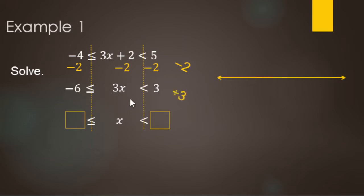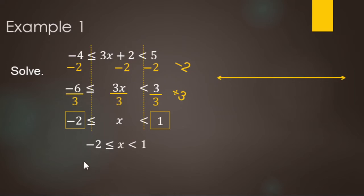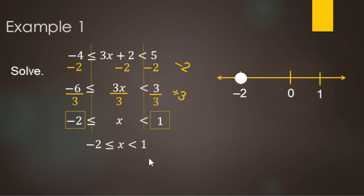Next, undo the multiplication by 3 with a divide by 3 to all three sides. Negative divided by positive is negative; negative 6 divided by 3 is negative 2. 3 divided by 3 makes 1, leaving just x. So our compound inequality is negative 2 is less than or equal to x is less than 1. For the number line, we need 0, negative 2, and positive 1. Negative 2 is an or-equal-to, so it gets a closed circle. x is strictly less than 1, so 1 gets an open circle. The x is shaded between them.